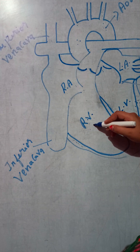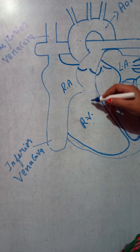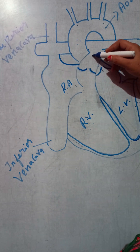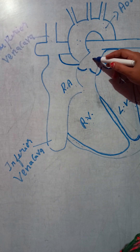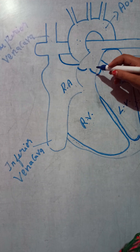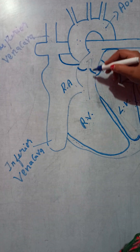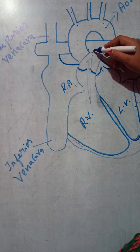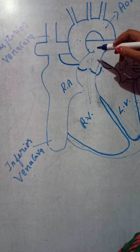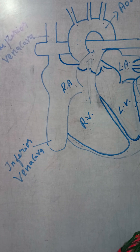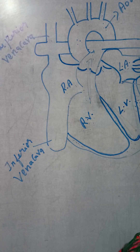From the right ventricle, the blood moves towards the pulmonary artery. The pulmonary artery distributes the blood to our lungs, where it gets oxygenated.